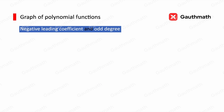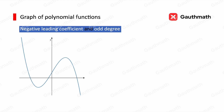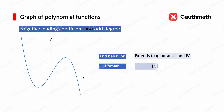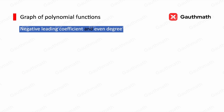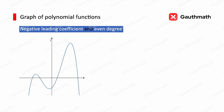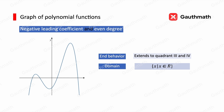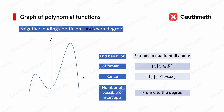For scenario 3, negative leading coefficient and odd degree, the graph extends to quadrant 2 and 4. The domain is x belongs to all real numbers, the range is y belongs to all real numbers, and the number of possible x-intercepts is from 1 to the degree. For scenario 4, negative leading coefficient and even degree, the graph opens downwards, extending to quadrants 3 and 4. The domain is all real numbers, the range is y less than or equal to the maximum value, and the number of possible x-intercepts is from 0 to the degree.